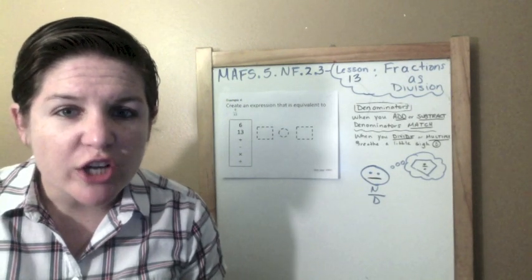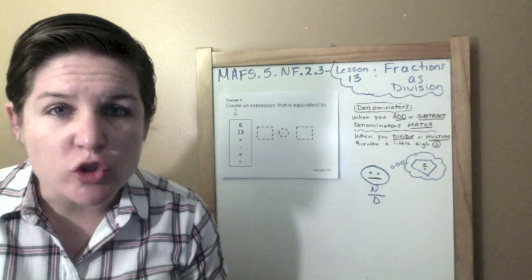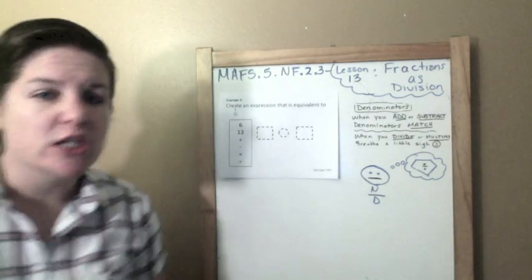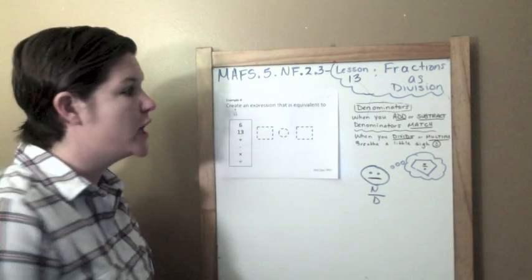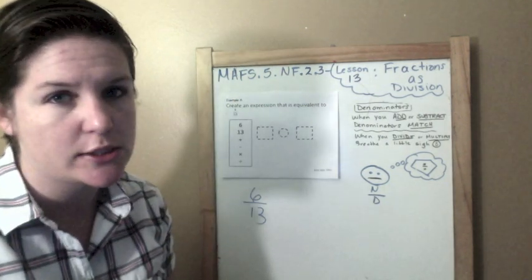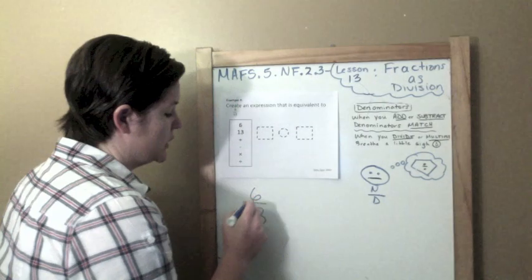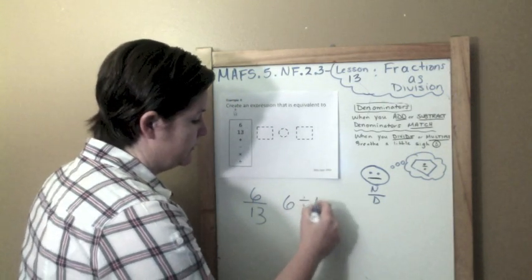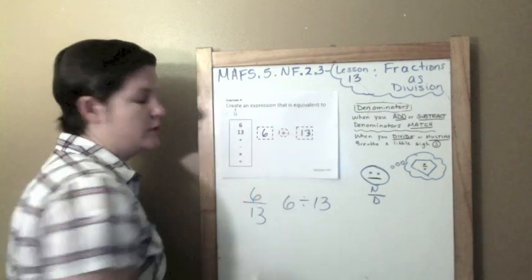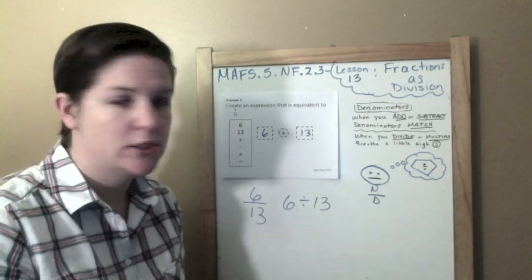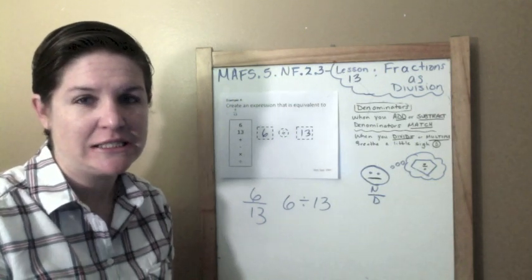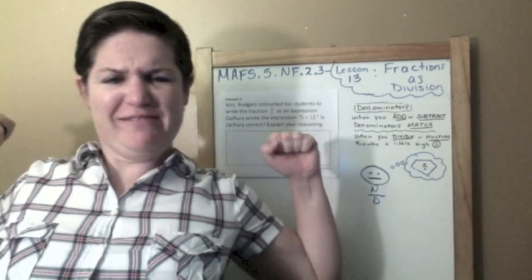Example four: Create an expression that is equivalent to six-thirteenths. An expression means I don't have an equal sign. So six-thirteenths, well this totally means divided by. So it's really just saying six divided by thirteen. So I just take this guy, I'll put him here, I'll take thirteen, I'll put him here, and I'm dividing by. This is my smiley face.